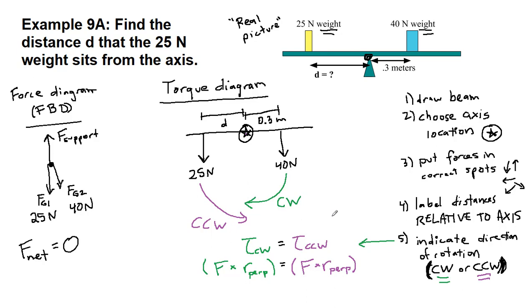The nice thing about this starter example is that all of the forces are up and down, and all of the distances are side to side. So that perpendicular idea is built in already. So clockwise, we have a 40 Newton force times 0.3 meters, and in the counterclockwise direction, we have the 25 Newton force times our unknown distance d.